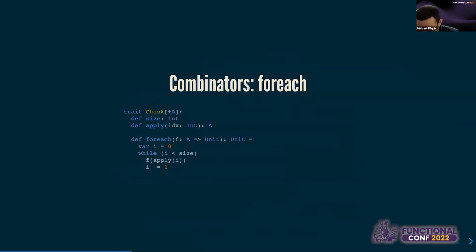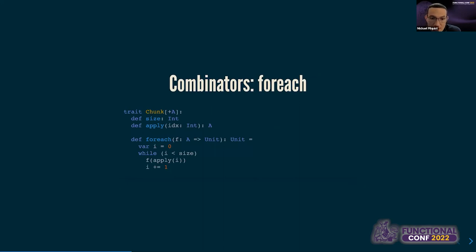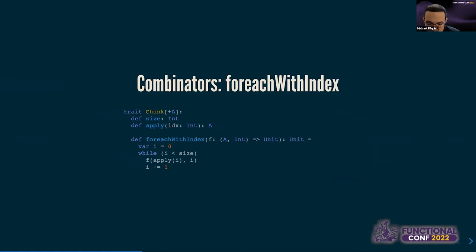Let's add some combinators to our data type. The first might be a side-effecting forEach operation — apply a function to every element in the chunk. Since we have a finite size and an efficient apply operation, this is just a while loop starting at index zero and iterating through all elements calling our function. Likewise, forEachWithIndex passes the index into the function as well.